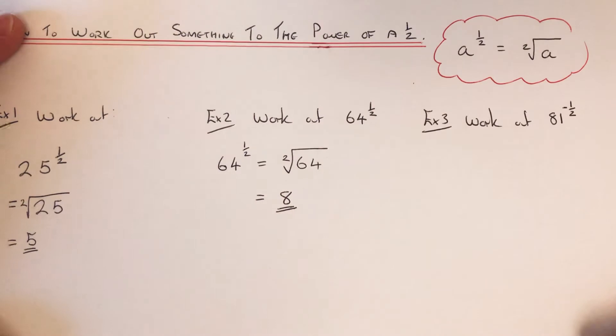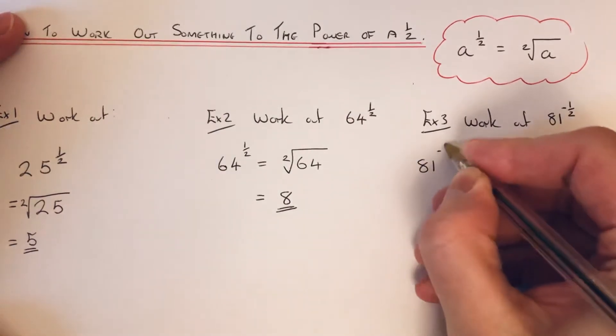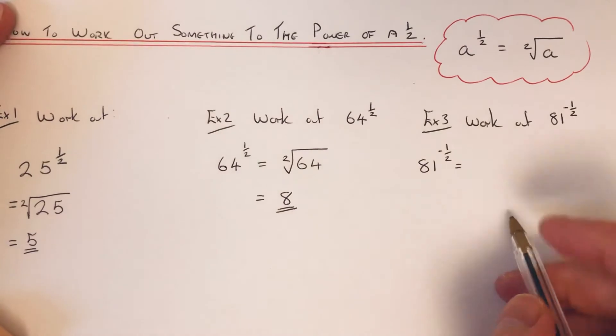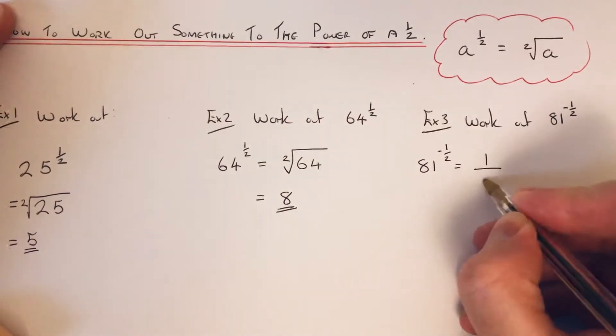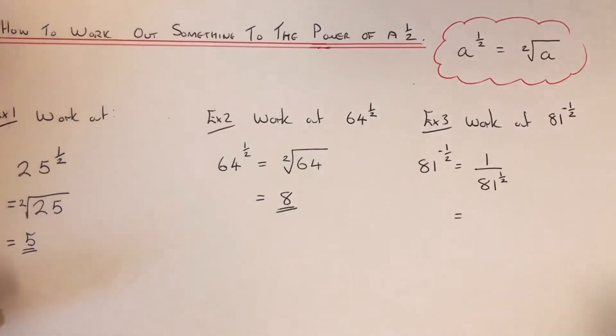So the final example then is a little bit harder than the other two because we're going to work out 81 to the power of minus a half. First of all, we need to write this as 1 over 81 to the power of a half.